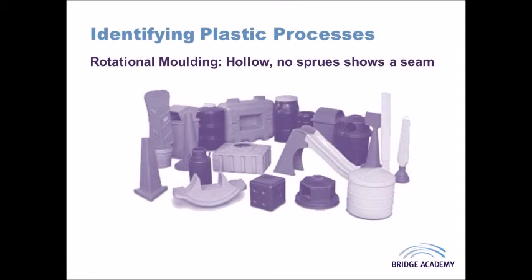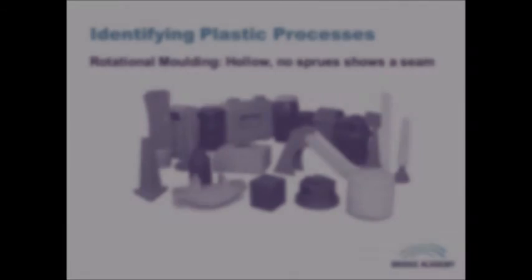With rotational molding, all products are hollow. You will not see a sprue, because unlike blow molding and injection molding, the plastic is not inserted in — instead it starts as polymer granules that are rotated around. You will probably see a seam line going around where the two mold halves have been joined together, and you can also add surface details.